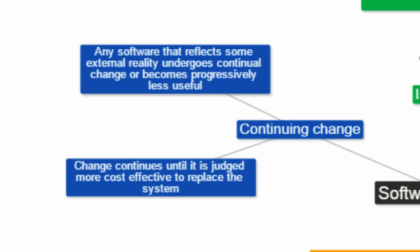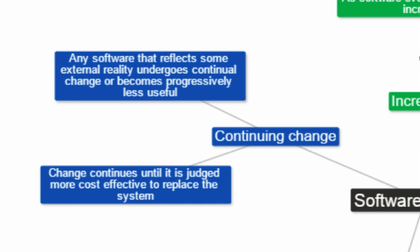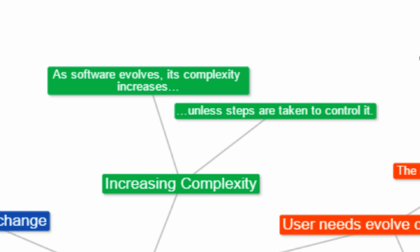After a lot of patches and updates, a new system will eventually need to replace the existing system. As software evolves, it becomes more and more complex, unless steps are taken to control it. Software can become bloated with added features, including unnecessary features. It can also become bloated with patches, updates and bug fixes.